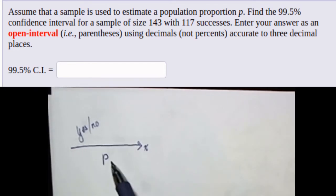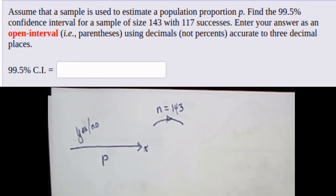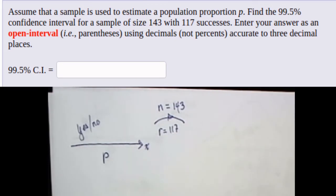The population parameter is the proportion of individuals in the population who are in the category. A sample of 143 individuals is selected of which there are 117 successes, or in other words there's 117 of them that are yeses to the question are you in the category.